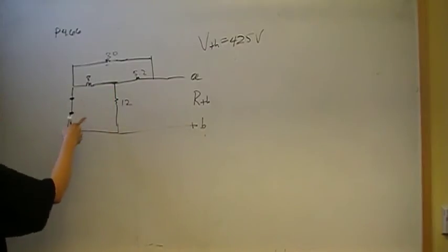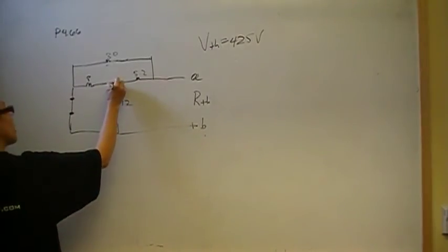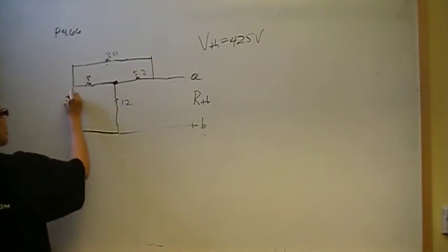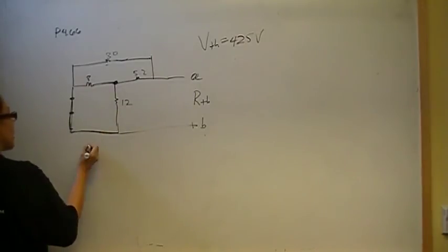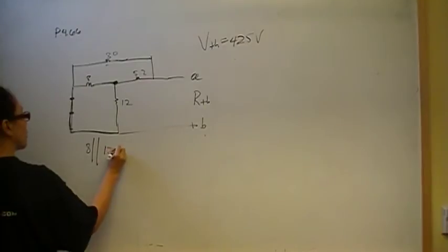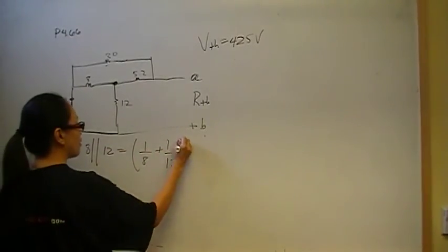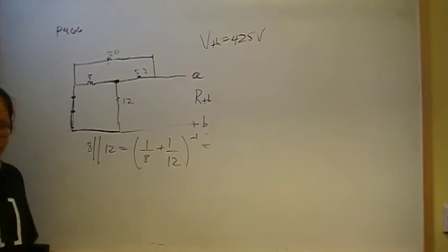So here, we have this point here. The 8 and the 12 are connected there. But the 8 and the 12 are also connected here by a short circuit. So that means all of this is 8 in parallel with 12. That's going to be 1 over 8 plus 1 over 12, the inverse of that.